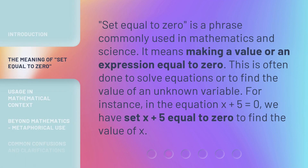Set Equal to Zero is a phrase commonly used in mathematics and science. It means making a value or an expression equal to zero. This is often done to solve equations or to find the value of an unknown variable. For instance, in the equation x plus 5 equals zero, we have set x plus 5 equal to zero to find the value of x.